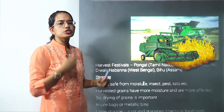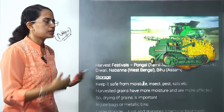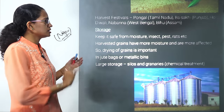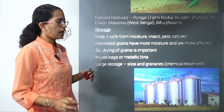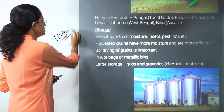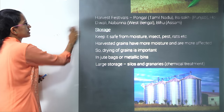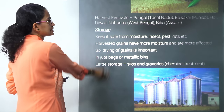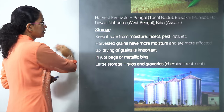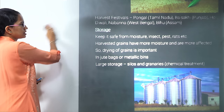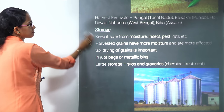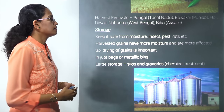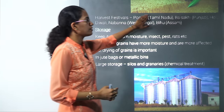In India, various harvest festivals are celebrated. These include Pongal in Tamil Nadu, Baisakhi in Punjab, Diwali across India, Nabana in West Bengal, and Bihu in Assam. These are some of the major harvest festivals that take place in India.